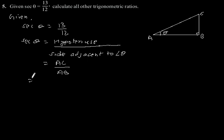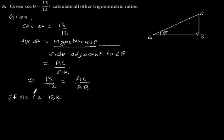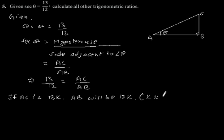So hypotenuse is AC and side adjacent to angle θ is AB, giving AC/AB. This implies 13/12 is equal to AC/AB. Now if AC is 13K, then AB will be 12K, where K is a positive integer.